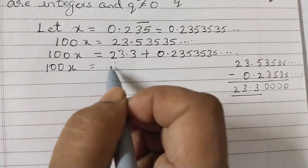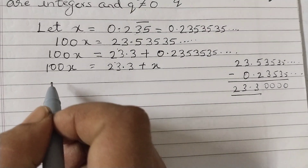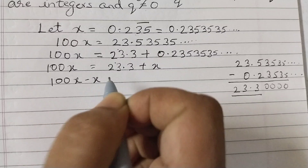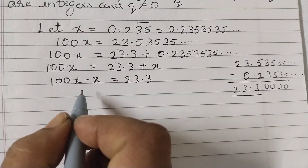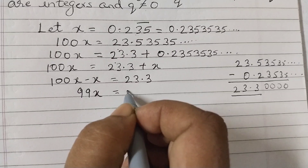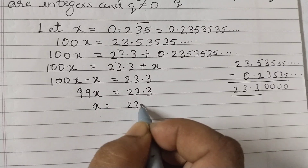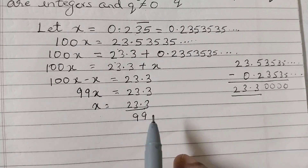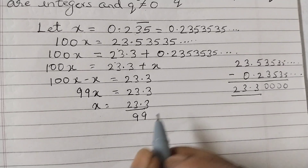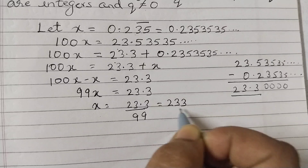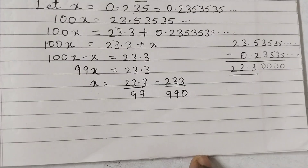Now rewriting: 100x equals 23.3 plus x. Bringing x to the left-hand side: 100x minus x equals 23.3, so 99x equals 23.3, and x equals 23.3 divided by 99. To remove the decimal point, multiply both numerator and denominator by 10, which gives 233 over 990.